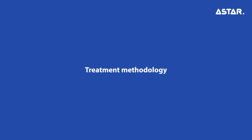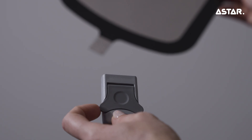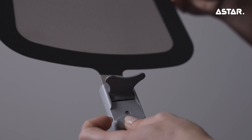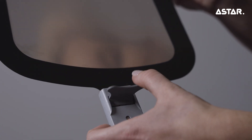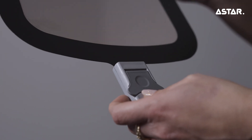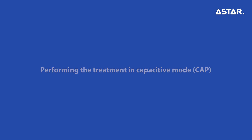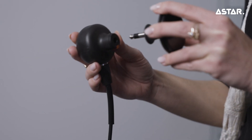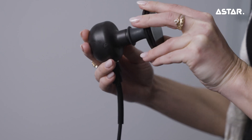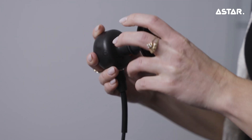Treatment methodology: Connect the neutral electrode to the cable with the clamp and place it in the right position, or attach it with Velcro belts to the patient's body. Performing the treatment in capacitive mode (CAP): mount a capacitive active electrode in the angular applicator.